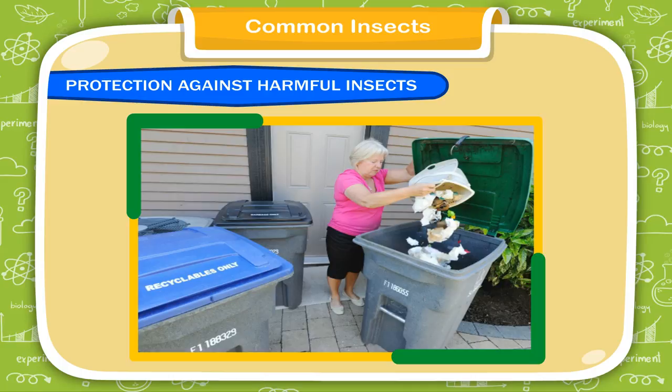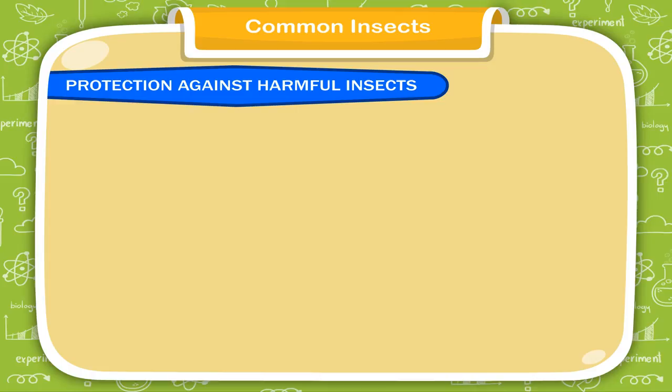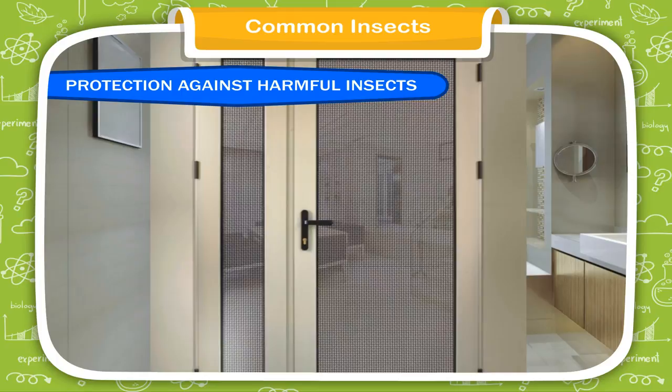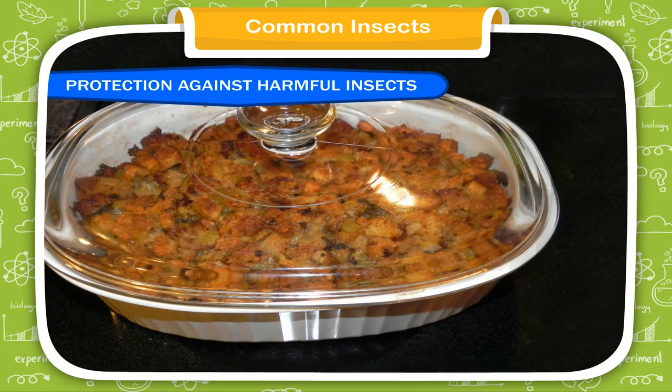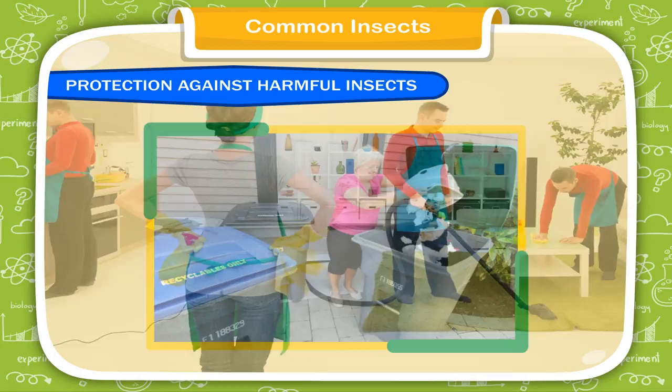Protection Against Harmful Insects. Fixing nets to the doors and windows prevents flying insects from entering the house. Food items should be kept covered. Surroundings of the house should be kept clean and garbage should be disposed of suitably.